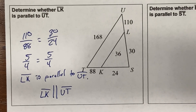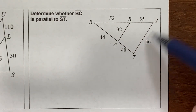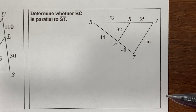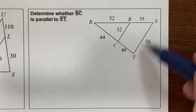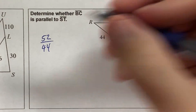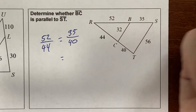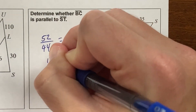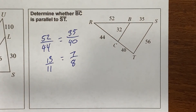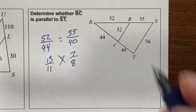Let's look at another one. Determine if BC is parallel to ST. We set up a proportion the same way: 52 over 44 and 35 over 40. Dividing 52 over 44 by 4 gives 13 over 11. Dividing 35 over 40 by 5 gives 7 over 8. Those are not equal, so BC is not parallel to ST.